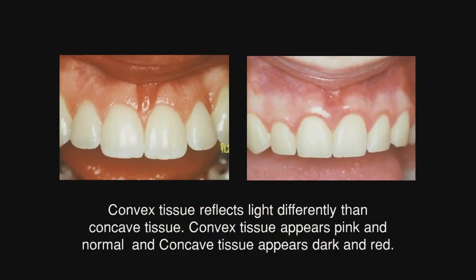On the left is the fleshy frenum on the patient who postured her lips to cover that up. On the right, had that frenum been removed — and this is another case — you can see the dark area of the arrow which shows the concavity that is present. Convex tissue reflects light differently than concave tissue. Convex tissue appears pink and normal, whereas concave tissue appears dark and red.